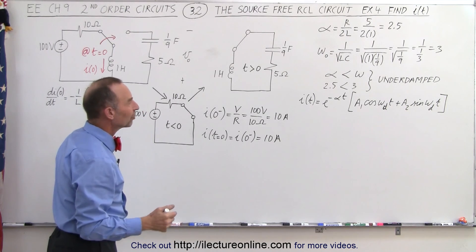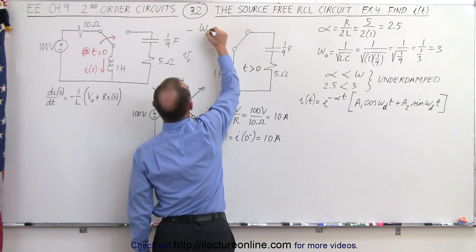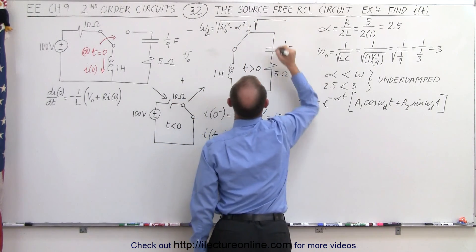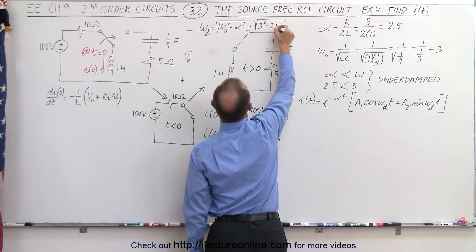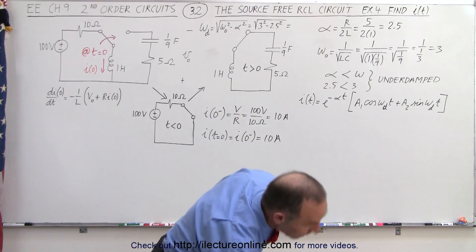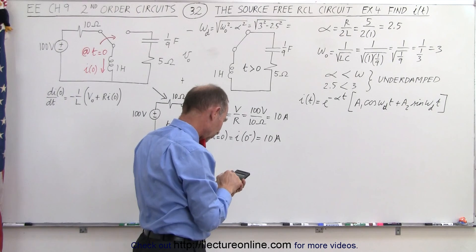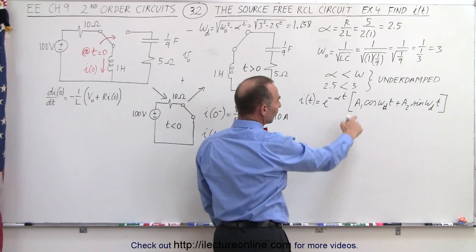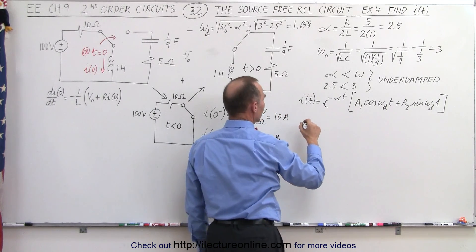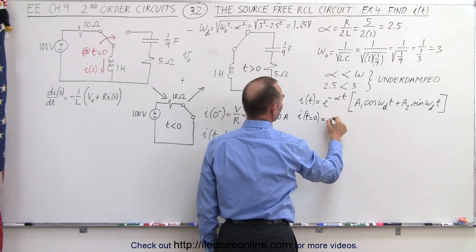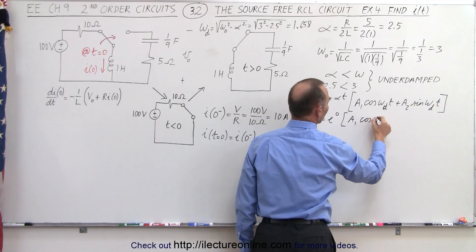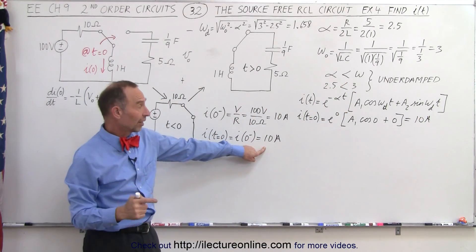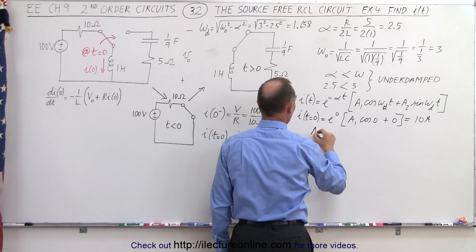Let's find the natural damped frequency. Omega sub d equals the square root of omega sub zero squared minus alpha squared, which is the square root of 3 squared minus 2.5 squared, equal to the square root of 9 minus 6.25. Taking the square root gives 1.658. For a1, when t equals zero, i equals e to the zero times a1 times cosine of zero, which is 1, plus a2 times sine of zero, which is 0. Since that equals 10 amps, a1 equals 10 amps.